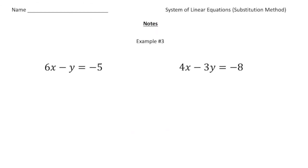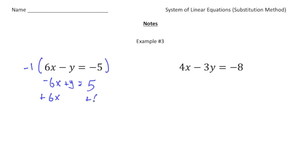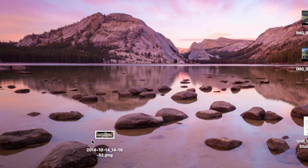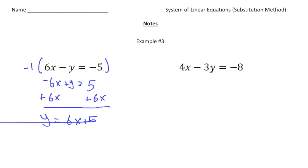Here we have 6x minus y equals negative 5, and 4x minus 3y equals negative 8. This is a little more complex because it doesn't tell you just what x or y equals. It'd be nice if it said x equals 2y plus 3 or y equals 5x minus 1, but there's nothing stopping us from transforming it to have y by itself. So I'm going to first multiply the whole equation by negative 1, making it negative 6x plus y equals 5. Then I'll add 6x to get y equals 6x plus 5.